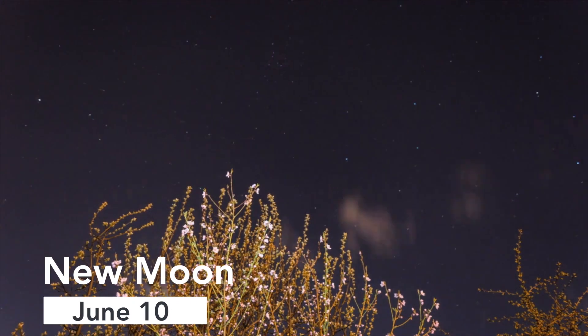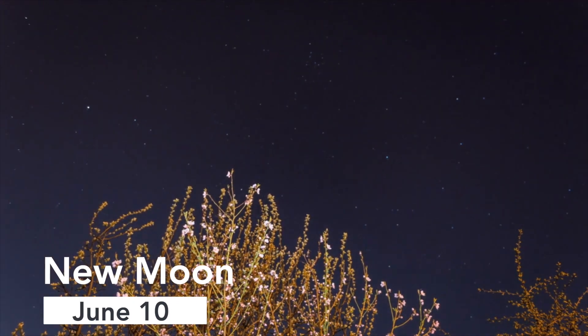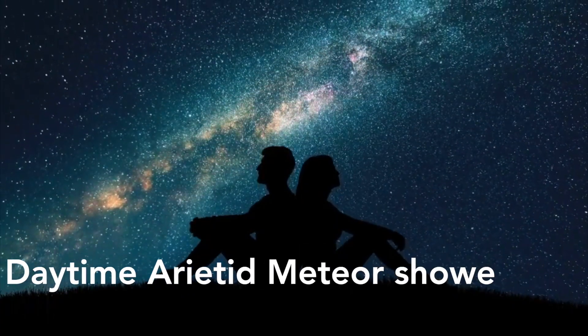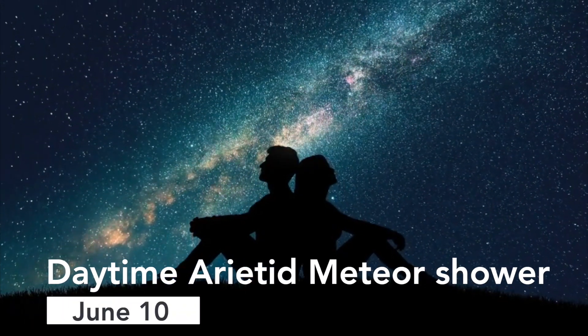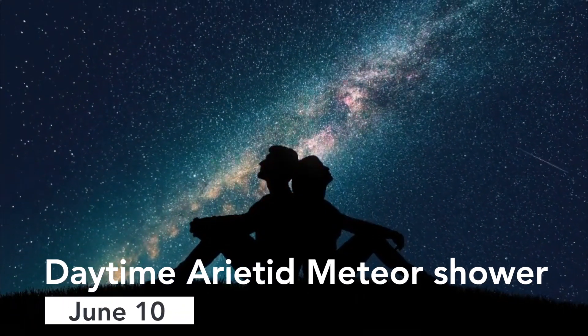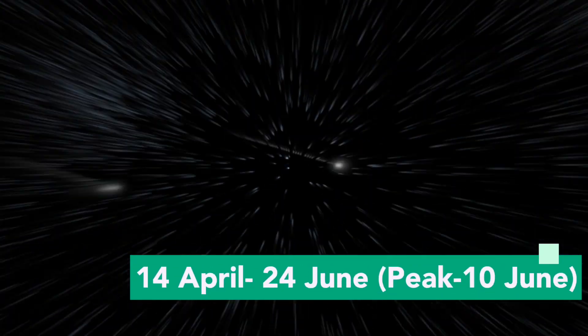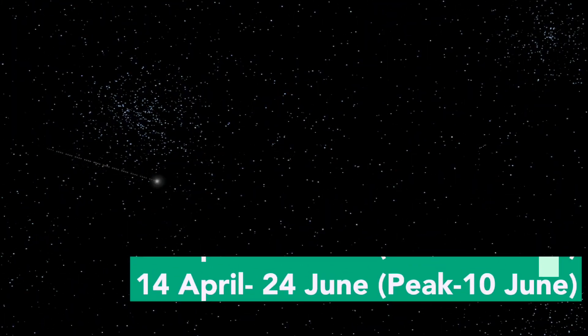New moon. The orbit of the moon carries it towards the sun, causing it to be lost behind the sun's glare for a few days. This phenomenon occurs every four weeks. Daytime Arietid Meteor Shower. The daytime Arietid meteor shower will be active from 14 April to 24 June, producing its peak rate of meteors around 10 June, giving you a long window to view the shooting stars at your location.